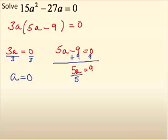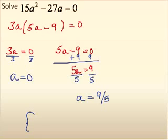I need to divide both sides by 5 to finish up the problem, and I get a equal to 9 fifths. So, my two answers are 0 and 9 fifths. And that ends this session on solving polynomial equations.